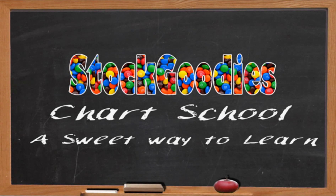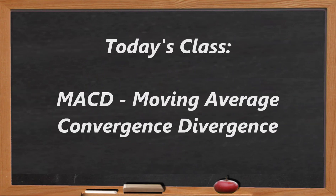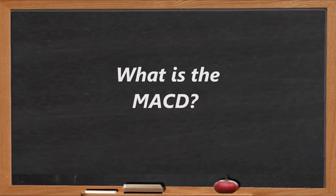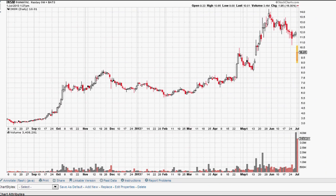Hello Traders and welcome to the Stock Goodies Chart School. The MACD is one of the most commonly used indicators and it's special because it brings together momentum and trend in one indicator. The standard setting for the MACD is the difference between the 12 and 26 period exponential moving averages.